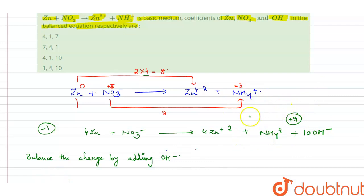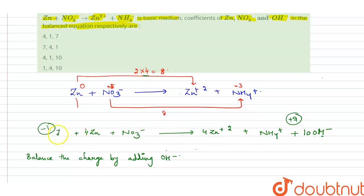The last step is to balance oxygen and hydrogen by adding water. There are 10 H from OH⁻ plus 4 H from NH4⁺, giving 14 H total. So we add 7 H2O to the right side. Oxygen will then balance itself with 7 oxygens on each side from water and OH⁻.